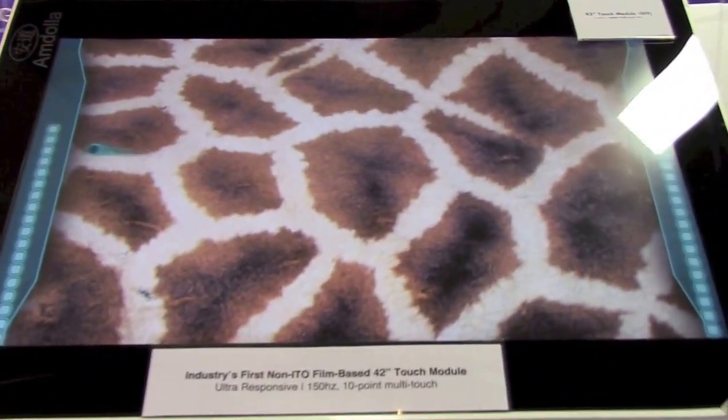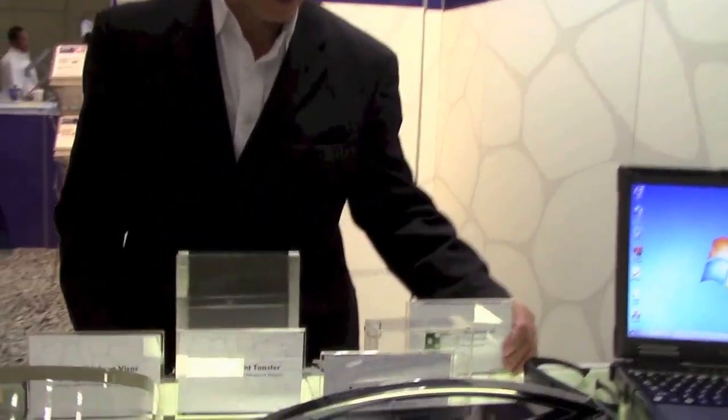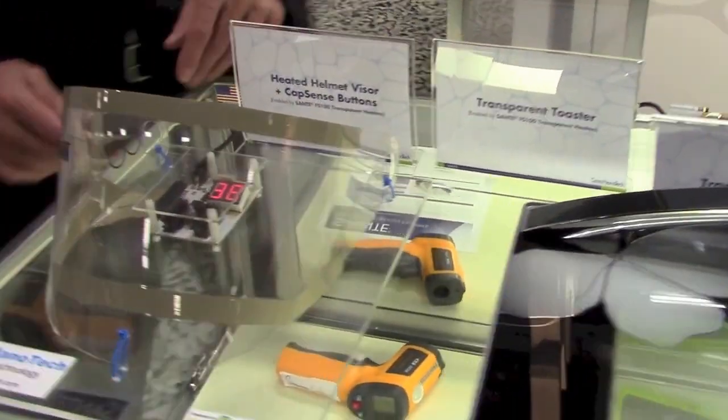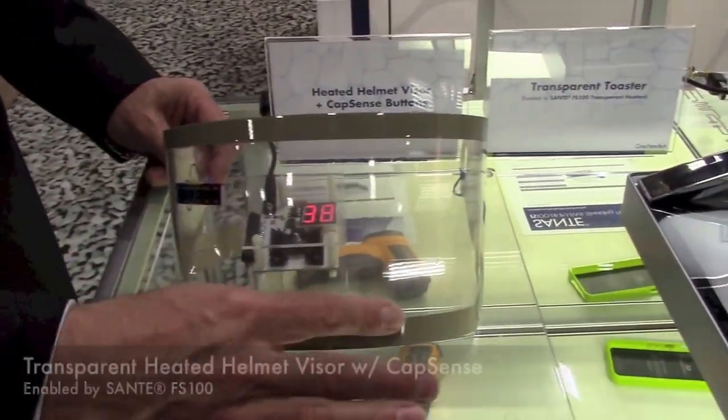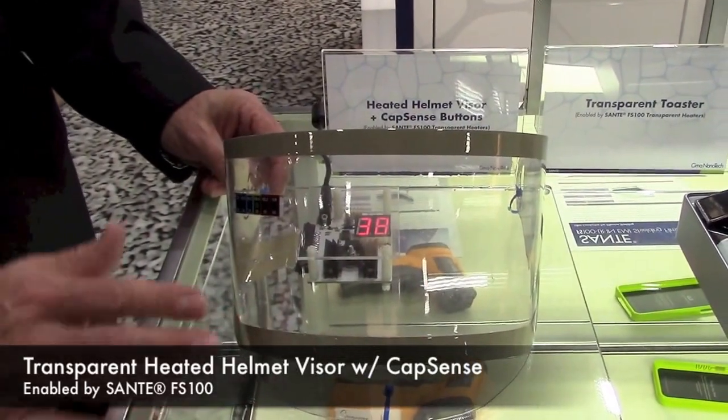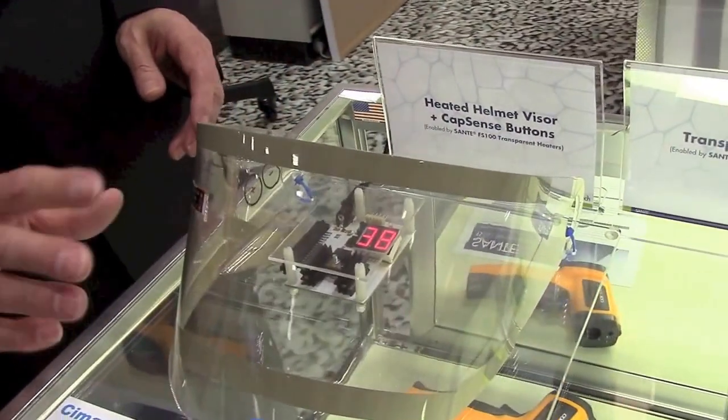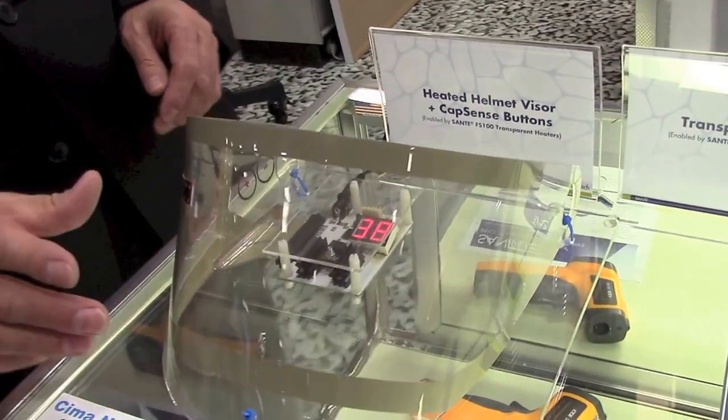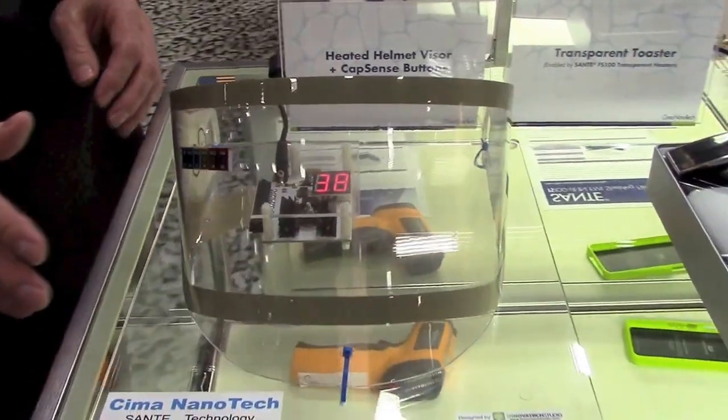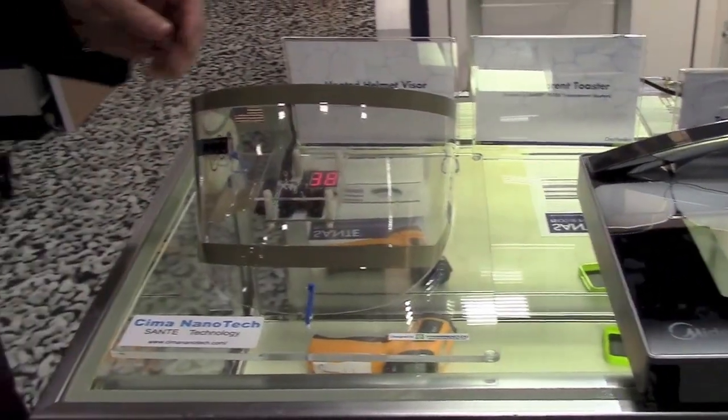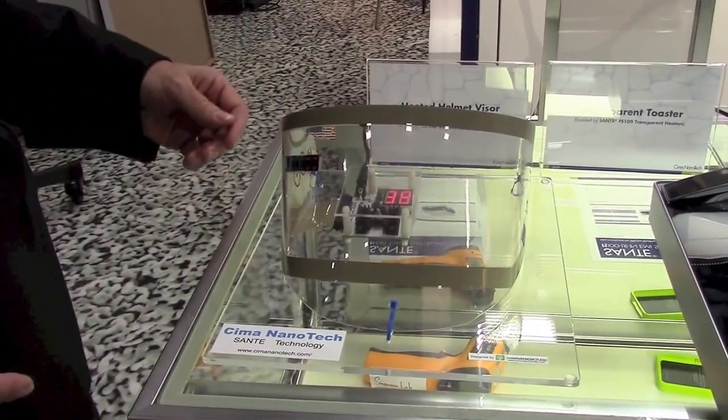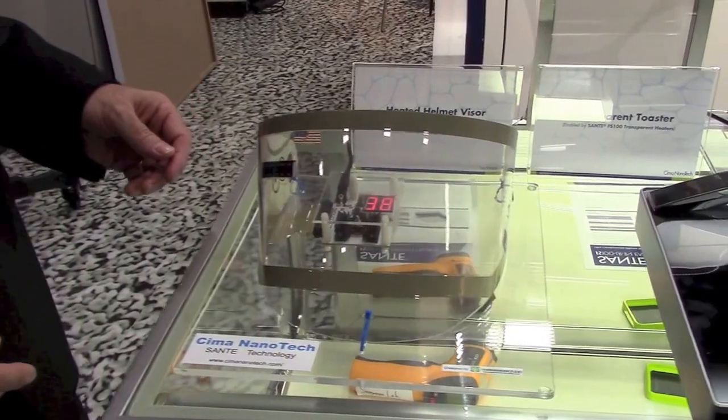Coming over here, we have some of the other capabilities that are possible with our Sante films, our Sante FS100 that can be used in heating applications. This is a visor for a helmet that has the ability to heat to get rid of fog or frost that may occur on a visor.